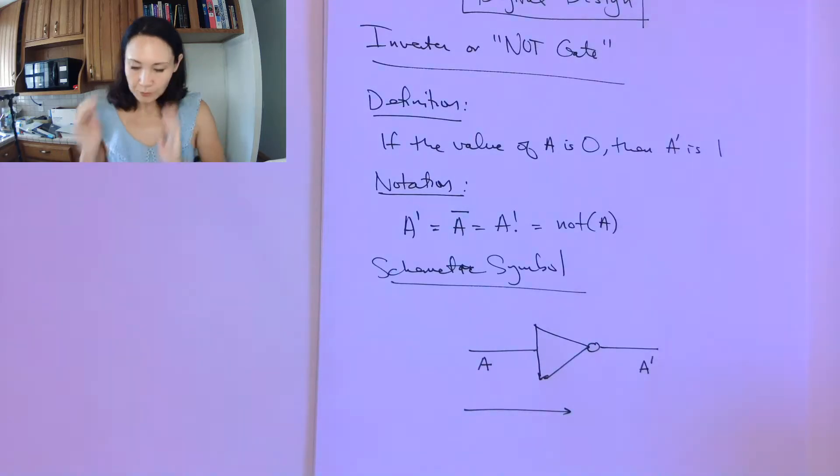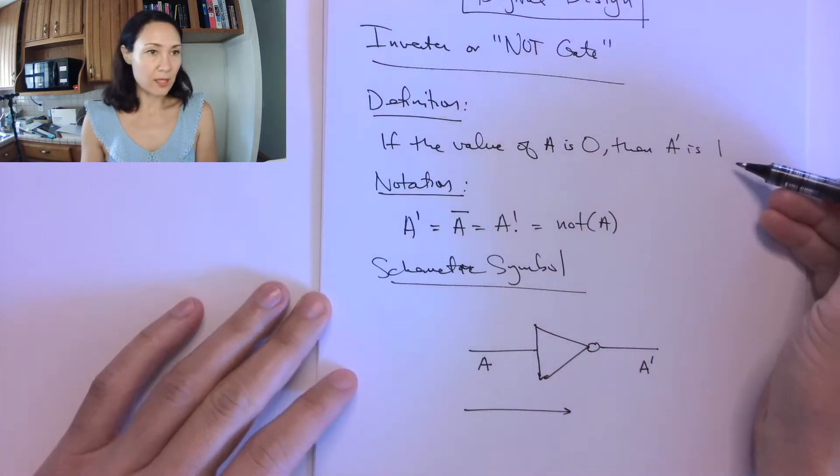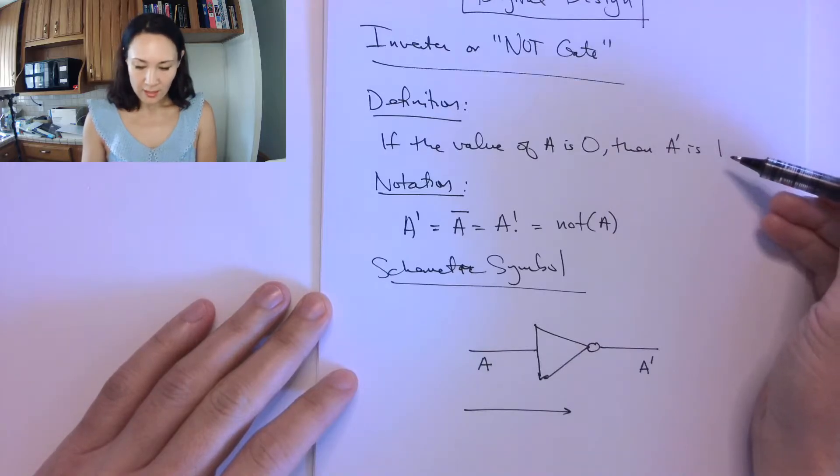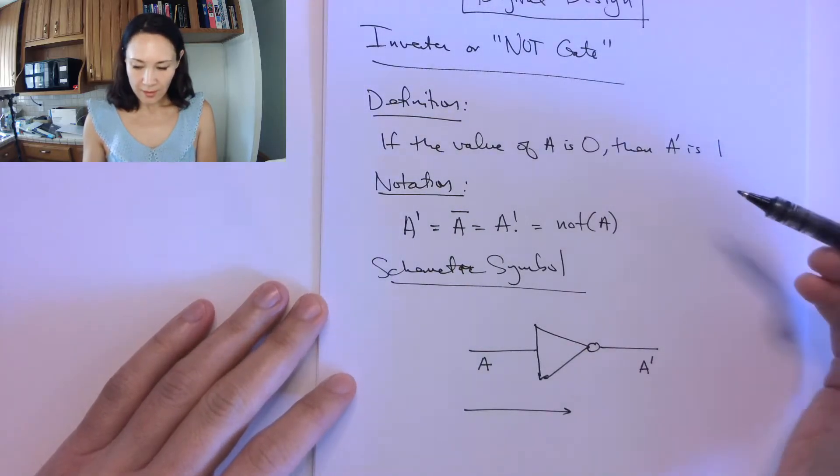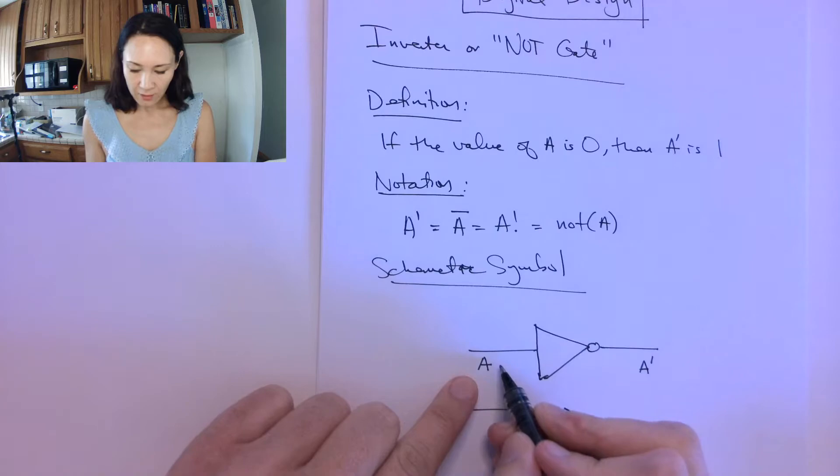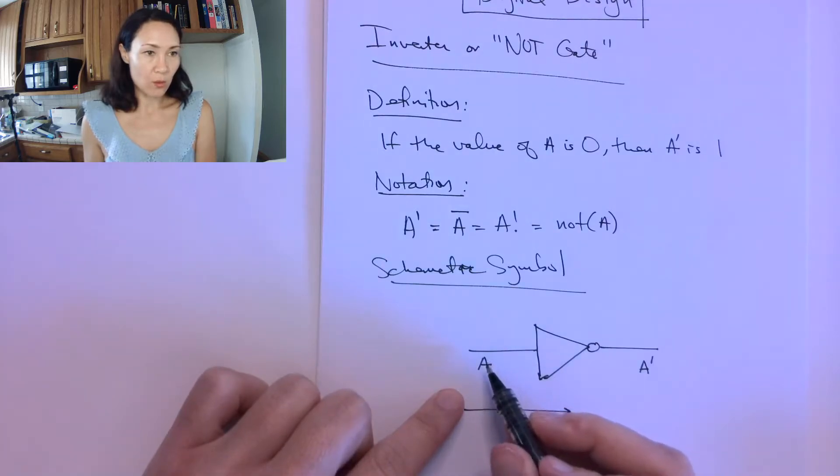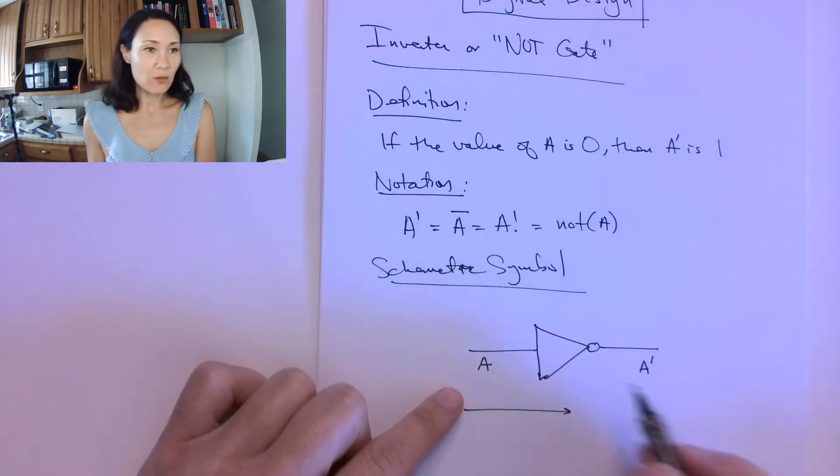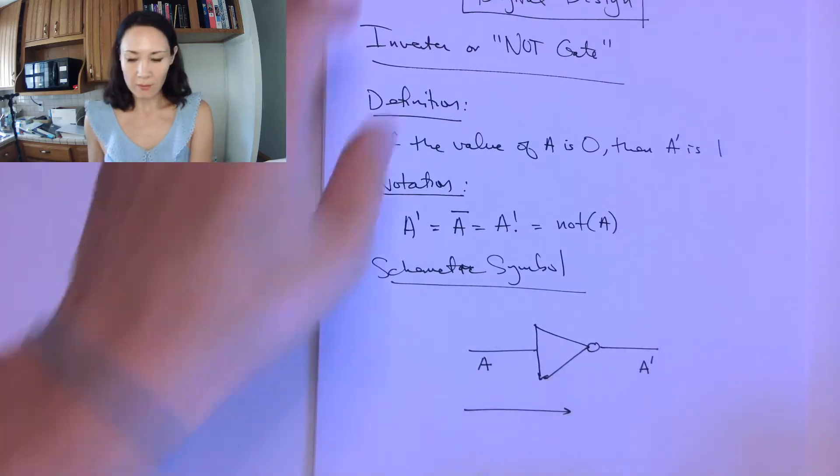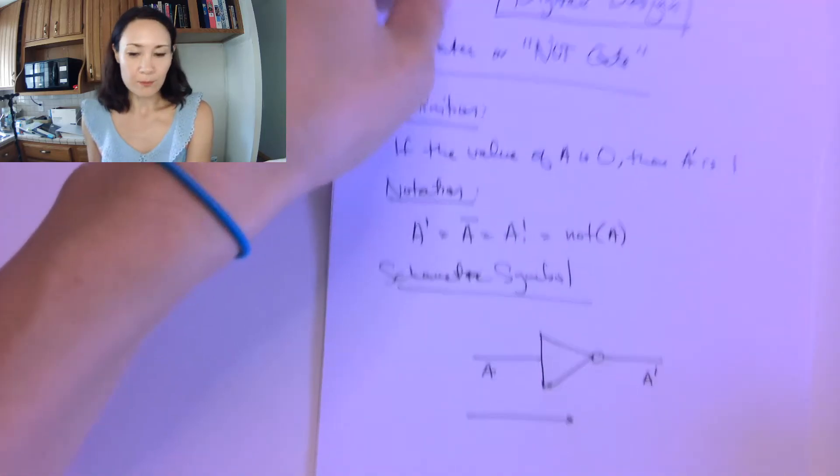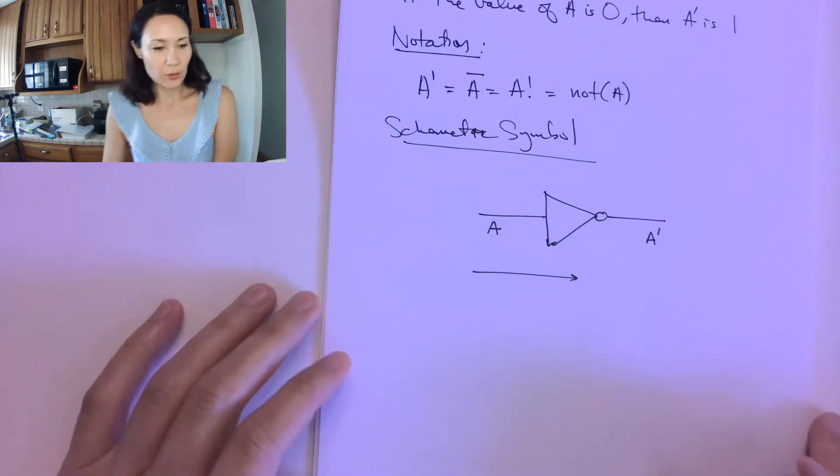Okay, so the converse of this statement here in our definition is that if we have a 1 coming in here, then the output will be a 0. If we have a 0 coming in here, then our output will be 1. So whatever it is, it's just going to invert, just like we talked about when we did 1s and 2s complement.